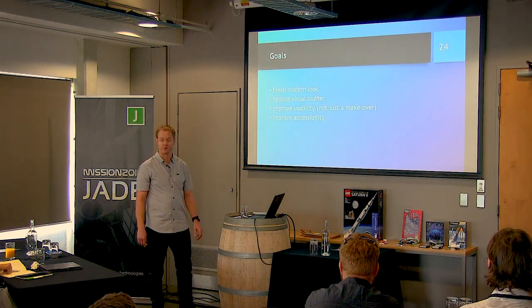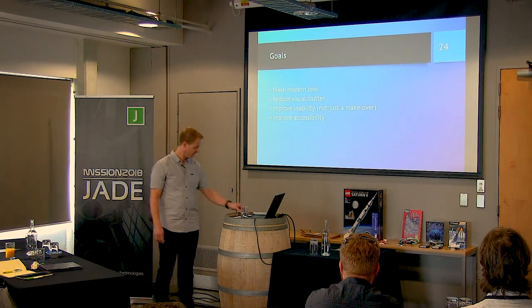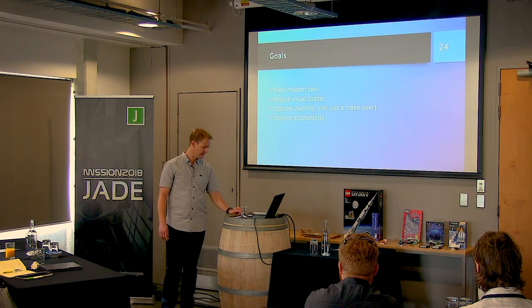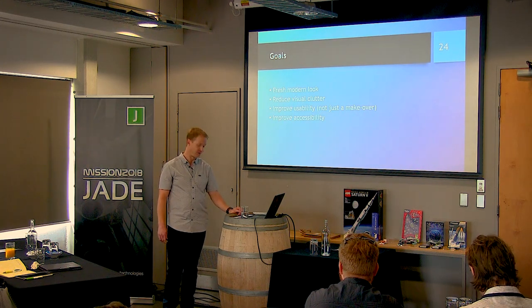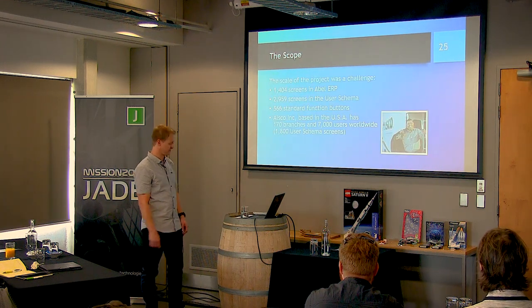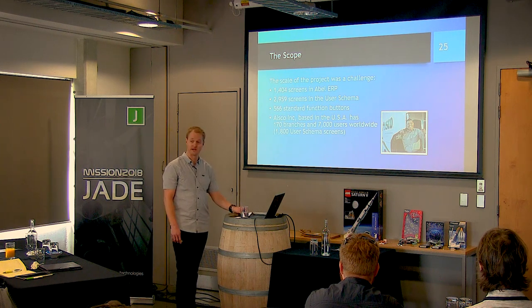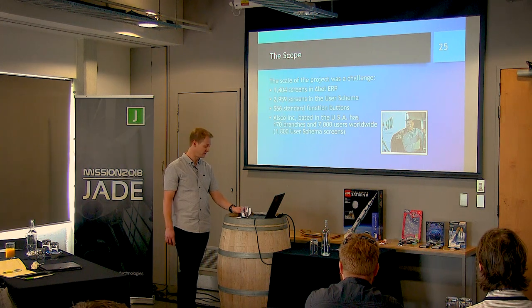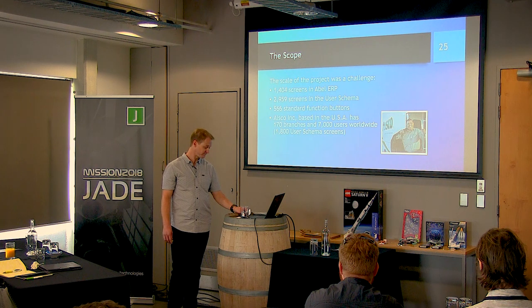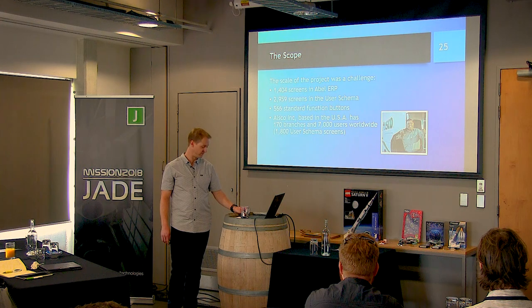The goals: obviously we want a fresh modern look, reduce the clutter, and improve usability. We didn't just want it to be a reskin, and we knew that relying less on colors would improve accessibility. The scale of the project: in total we needed to manage four and a half thousand screens — 1,400 in the core product, 1,400 with one of our distributors, and 1,800 on a single client. ALSCO are the largest linen rental business in the world.